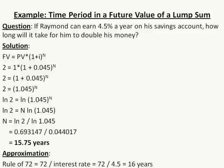Let's look at the solution. FV equals PV times 1 plus i raised to the nth power — that is the future value of a lump sum. FV stands for future value, PV stands for present value, i is the interest rate, and n is the time period — it is an exponent.